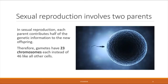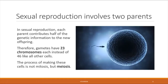It makes sense then that if these cells have a smaller number of chromosomes than the rest of your cells, mitosis will not produce them. There has to be a different process, and that process is called meiosis.